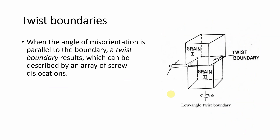Another defect is the twist boundary. When the angle of misorientation is parallel to the boundary, a twist boundary results, which can be described by an array of screw dislocations. A shear force acts on one grain in one direction and on the other grain in another direction, producing a twist, and the resulting defect is called a twist boundary.